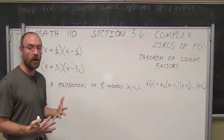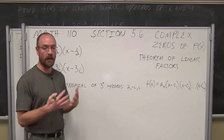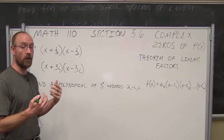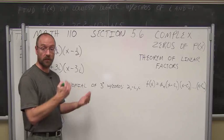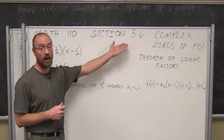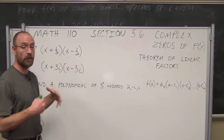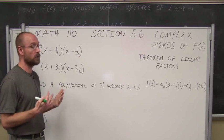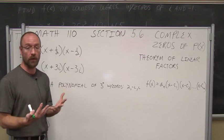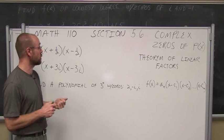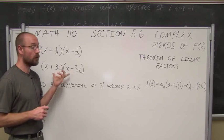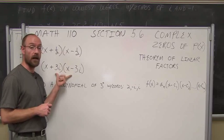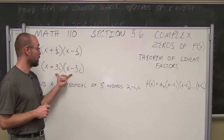Up to this point, we've dealt with polynomials that had integer coefficients, and we only looked for the real solutions, as we did in the previous section 5.5. Well, now we're going to look at more complex polynomials — polynomials that may have rational coefficients, not nice integers. And we're also going to be finding zeros, or solutions, in the complex number system.